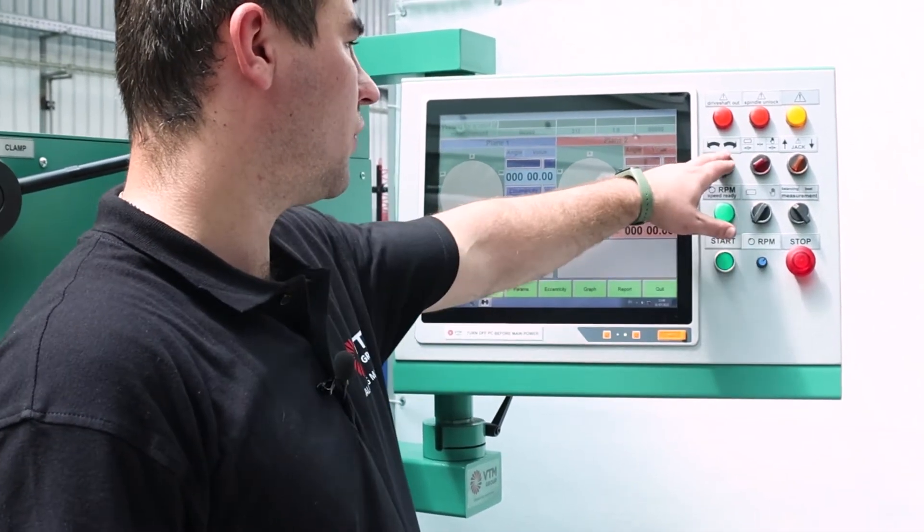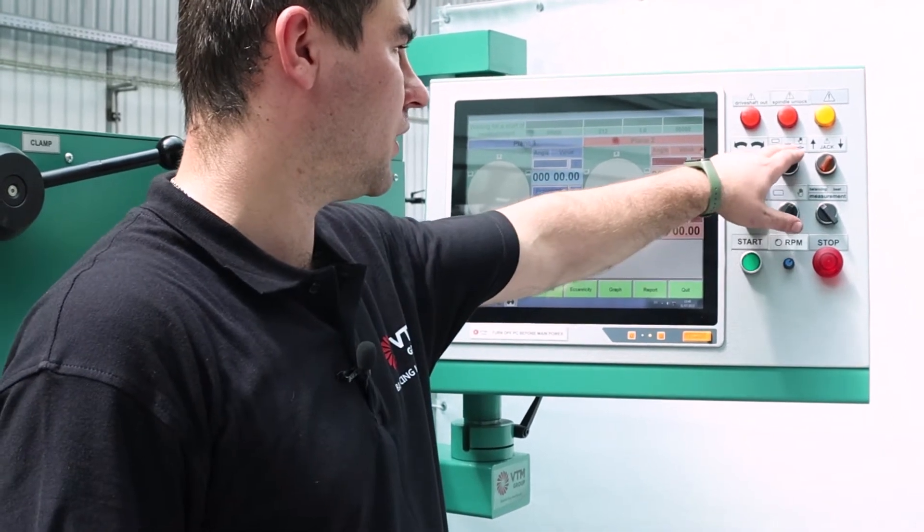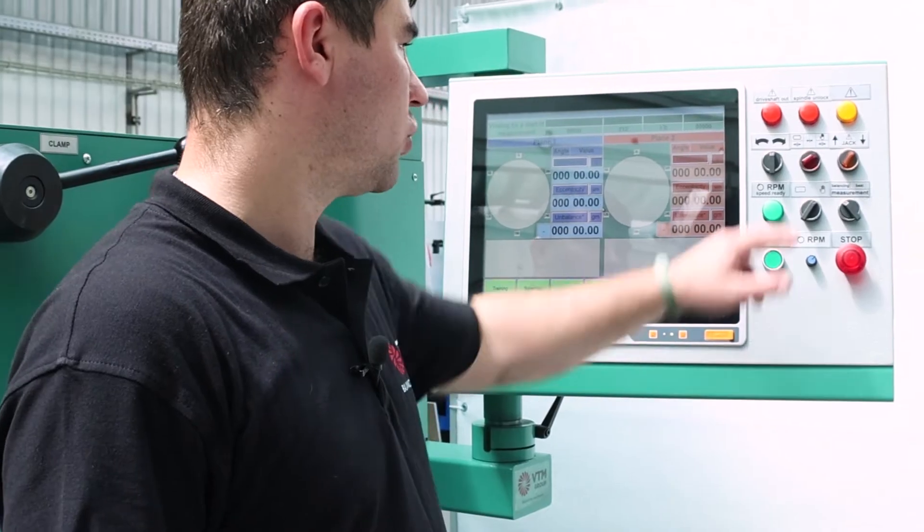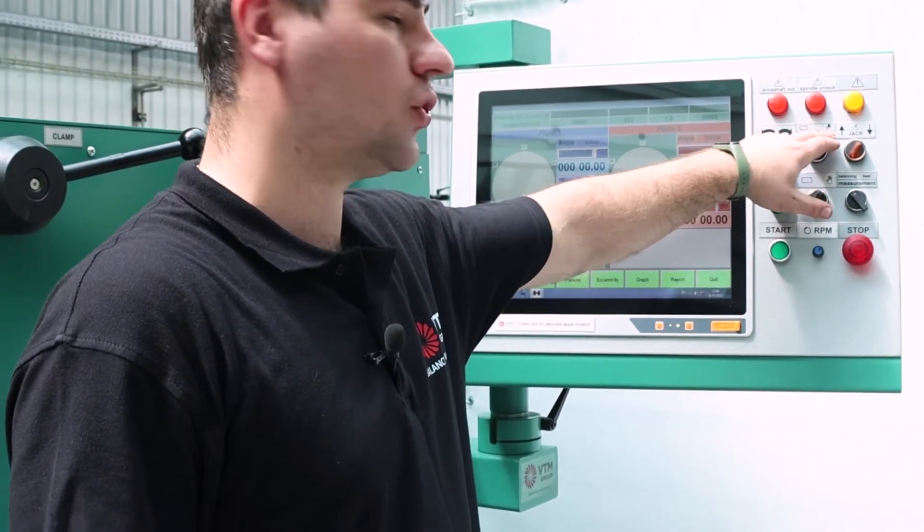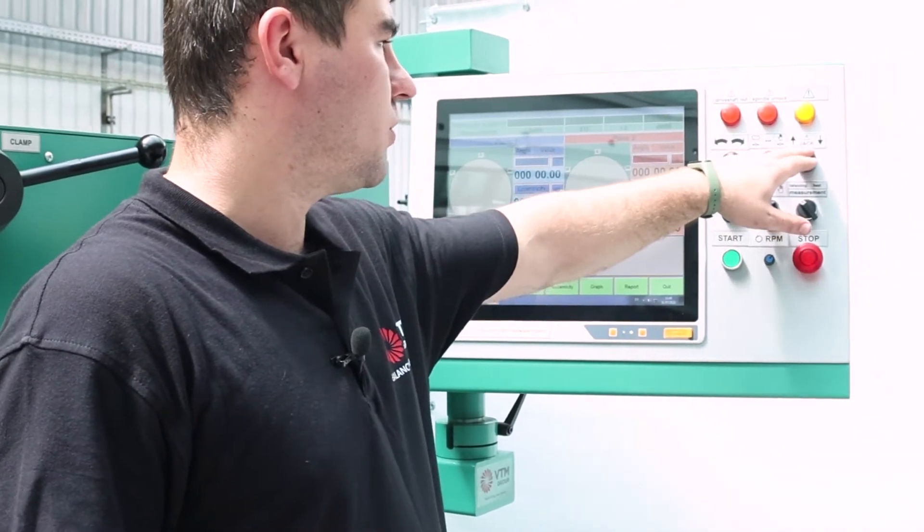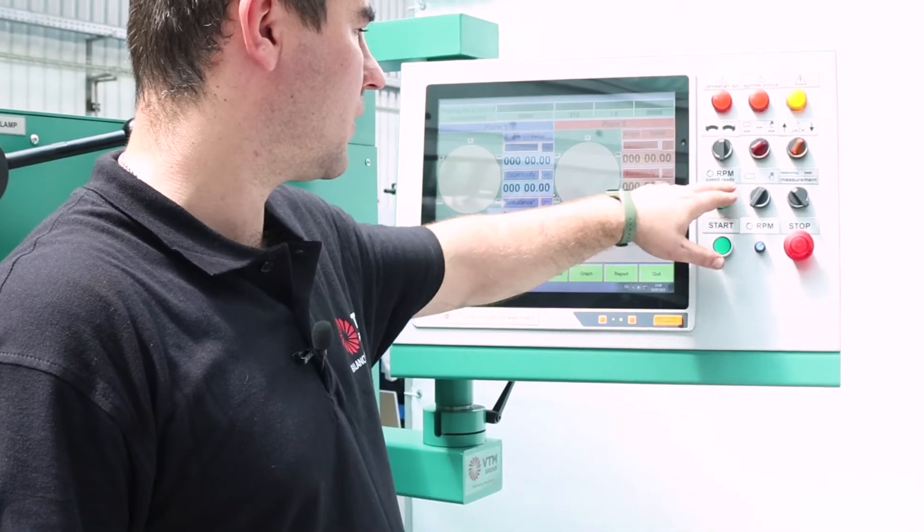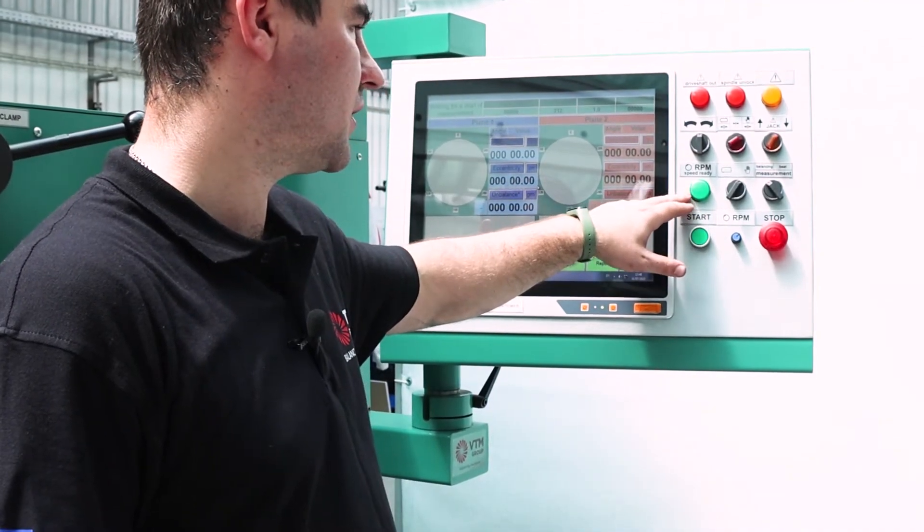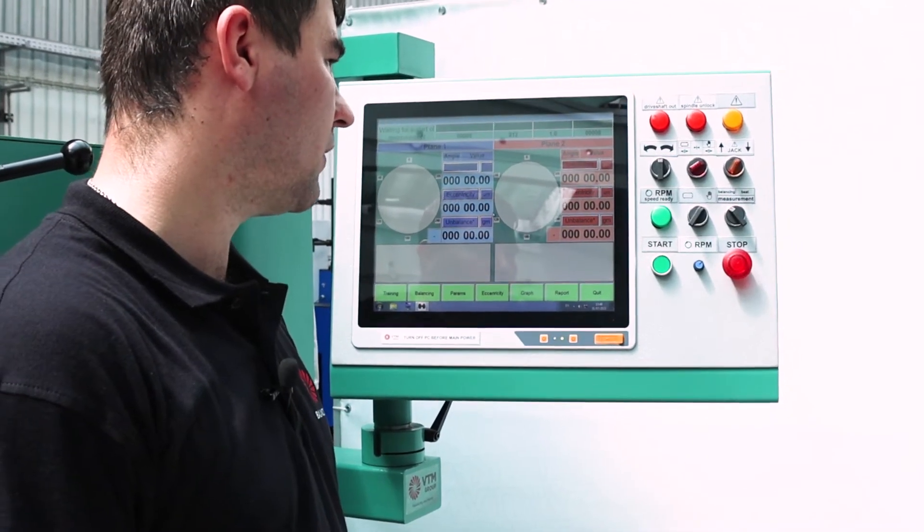The next switch is the rotation of the rotor. Next, the operating mode of the suspension clamps. It can be always unfixed in automatic mode and in manual mode. The next switch is the jacks in the raised or lowered state. The next indicator lamp lights up when the speed is reached. This switch selects the operating mode, either manual or automatic.